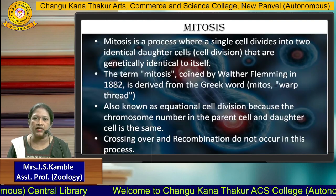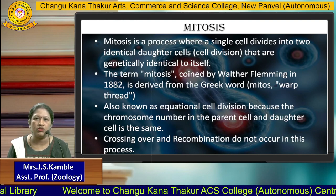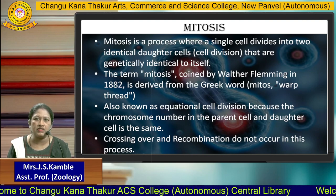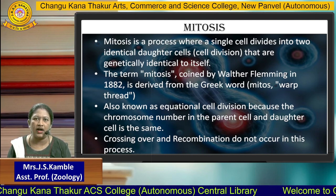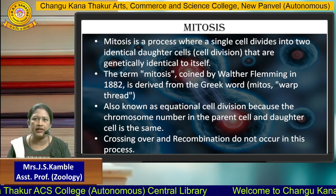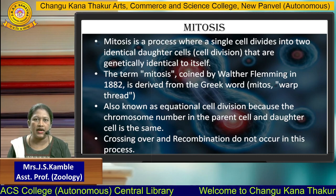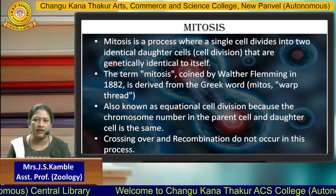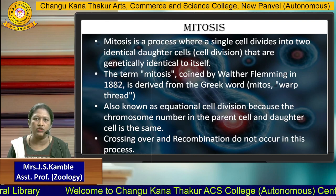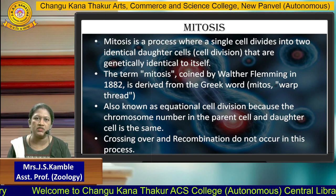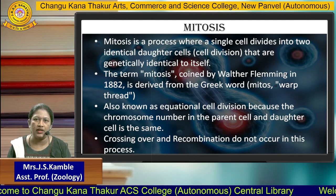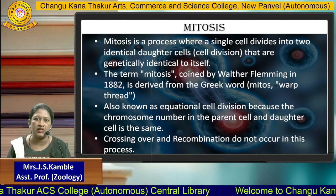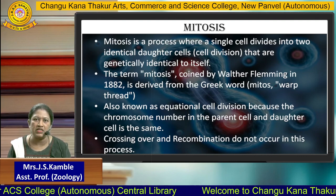Before taking information about mitosis, we should know the definition of mitosis. Mitosis is a process where a single cell divides into two identical daughter cells that are genetically identical to itself. As we know, a cell consists of many cellular organelles. Whenever all the cell organelles are divided equally into two daughter cells, that process is called mitosis. It is actually a cell division.